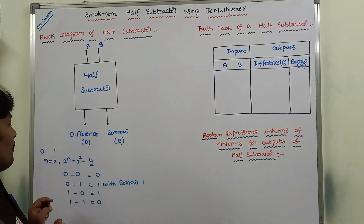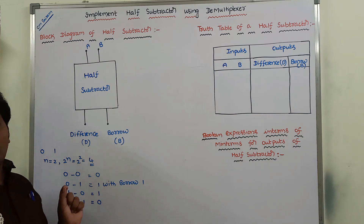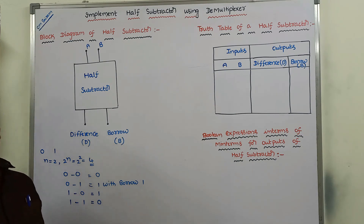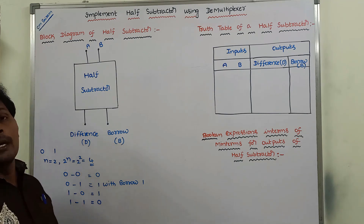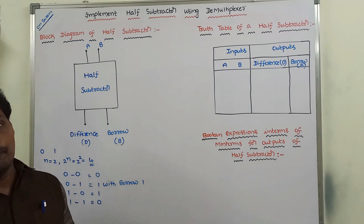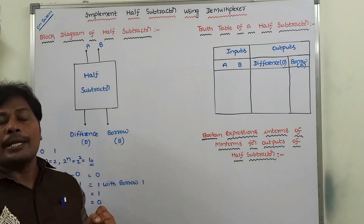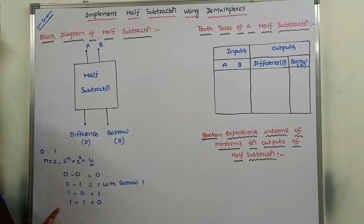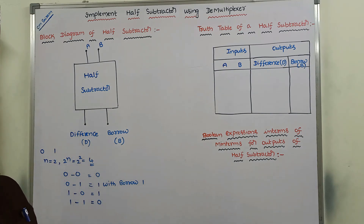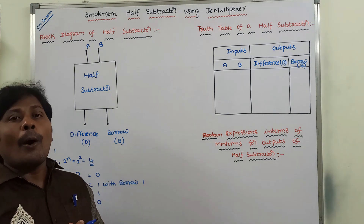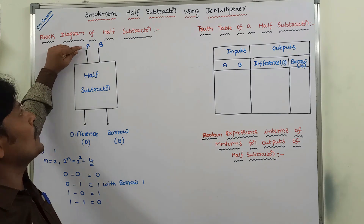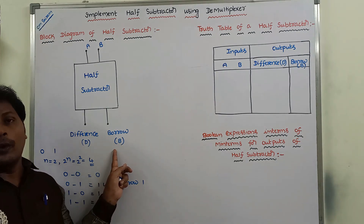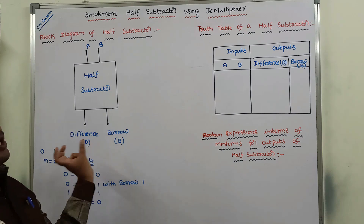We have to perform the subtraction operation between these two bits using those four rules. For that purpose, we use a combinational circuit called a half subtractor. A half subtractor is a combinational circuit that can take two inputs, A and B, and produce two outputs: that is difference and borrow.